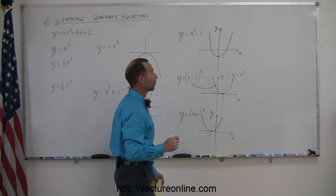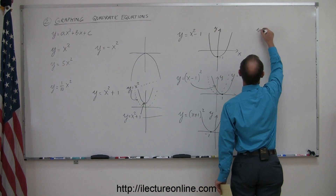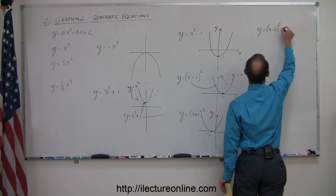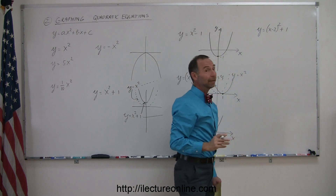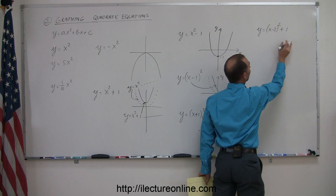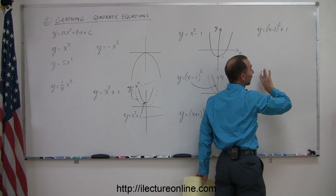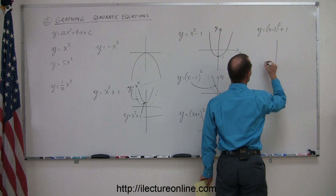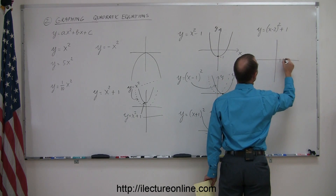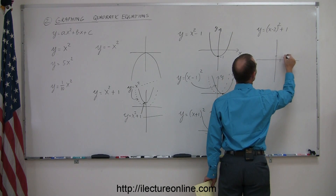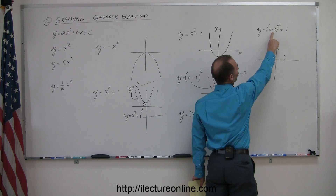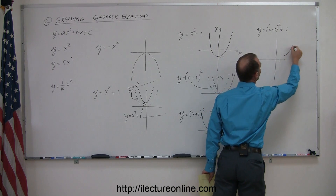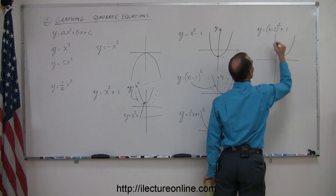Now let's combine them. What if you have y equals the quantity x minus two squared plus one? The plus one will raise the parabola up by one, and the minus two will move the parabola to the right by two units. So the vertex is two spots to the right and one unit up, and the parabola is graphed from there.